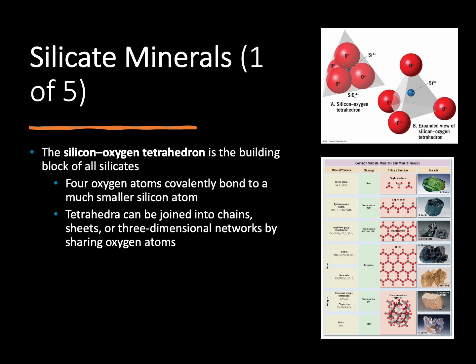Silicon and oxygen form in a very specific shape called a tetrahedron, which is essentially a pyramid. Silicon is surrounded by four oxygen atoms, creating this pyramid shape. These tetrahedra can start bonding to one another — they can form into chains, like a necklace chain. They can also form into sheets like pieces of paper, or really complex three-dimensional networks that form very hard and resistant minerals.